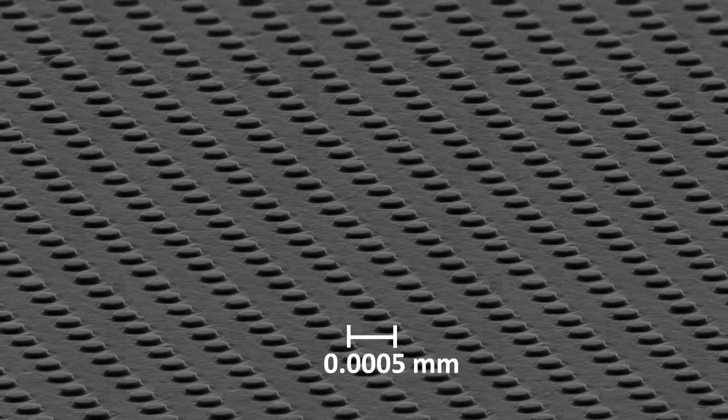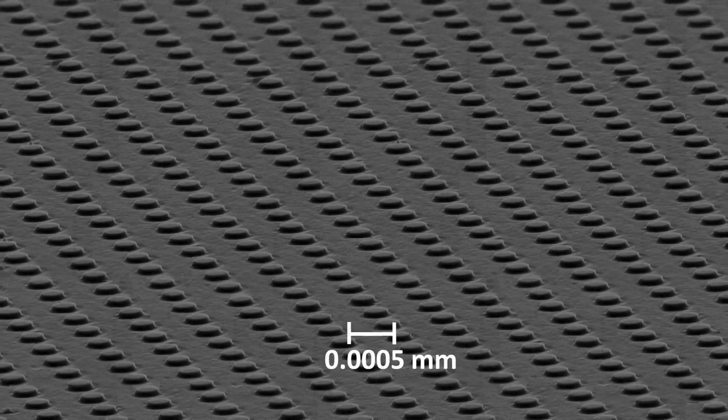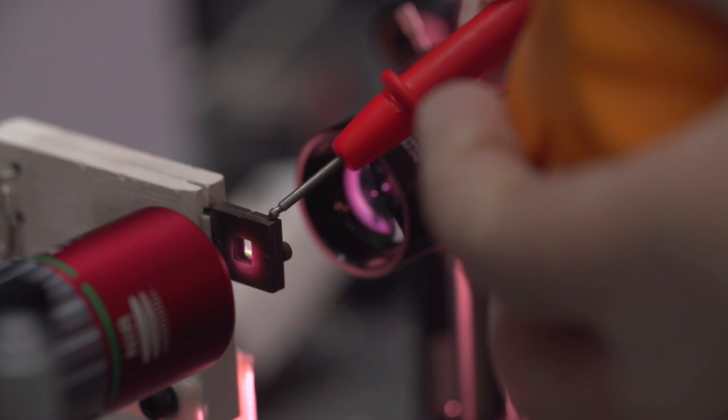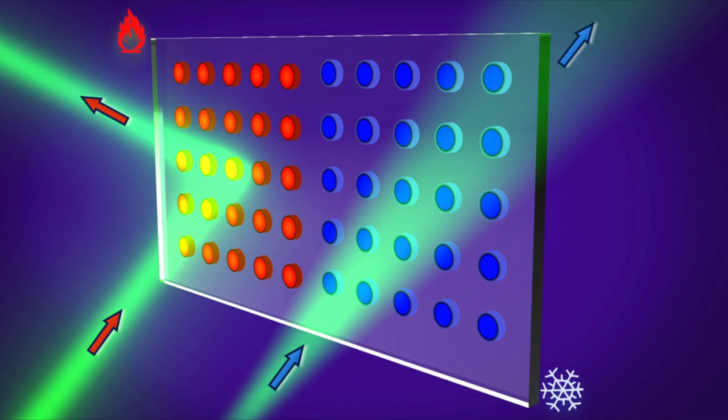Our smart mirror consists of a lot of dielectric nanoparticles which are carefully designed and arranged within a single layer. By adjusting the temperature of that thin layer, we are able to control the optical properties of those nanoparticles so that the entire surface can either transmit or reflect the incoming light on demand.